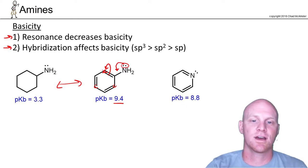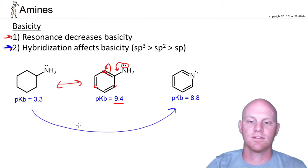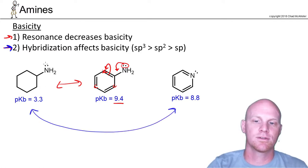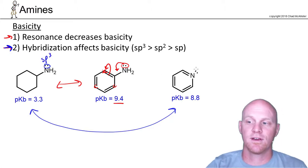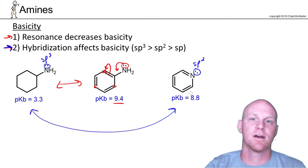The other thing we might have to check is a difference in hybridization. So if we compare these two, here the lone pair is on a nitrogen that is sp3 hybridized, whereas here in pyridine, the lone pair is on a nitrogen that is sp2 hybridized. With sp2 hybridization, that's greater s character.